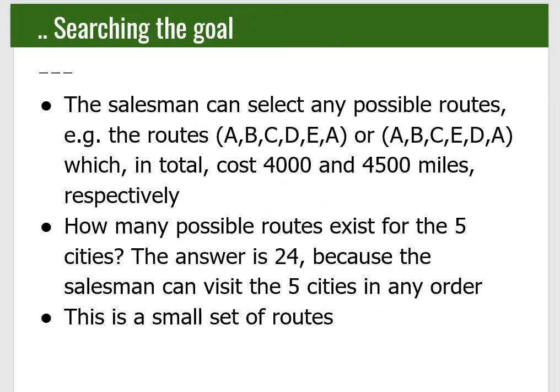Now, for five cities we only showed two routes, but there are actually 24 possible routes. This is because the salesman can visit the five cities in any order, giving a total of 24 different possible routes to consider.